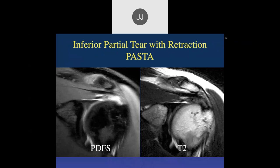This special type is called a PASTA lesion — described by Steve Snyder. PASTA stands for Partial Articular Surface Tendon Avulsion. Most orthopedic surgeons are familiar with this terminology. I usually describe it in words because half the time I forget the acronym.